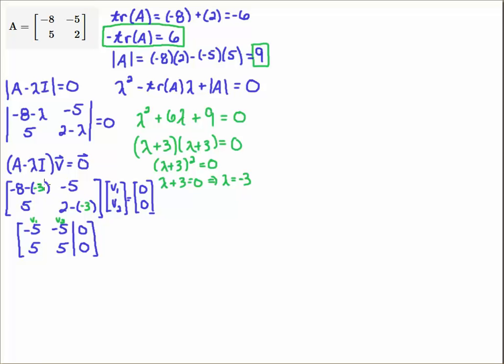I like to do it this way because sometimes if you have a minus sign, it can be confusing. So you have minus 8 minus minus 3 gives you a plus 3. So minus 8 plus 3 is minus 5. And then 2 minus minus 3 is 2 plus 3 gives you 5.